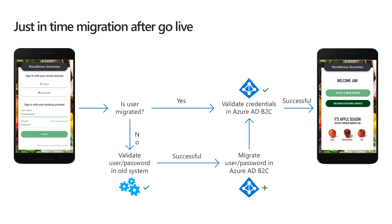When the user signs in, they are authenticated against the old system. If the authentication succeeds, the user is marked as migrated and the user password is stored in the Azure AD B2C directory. If the authentication with the old system fails, it means that the user didn't have the right password or could not remember it. Therefore, the user is asked to reset the password. The just-in-time migration is usually on for six months.